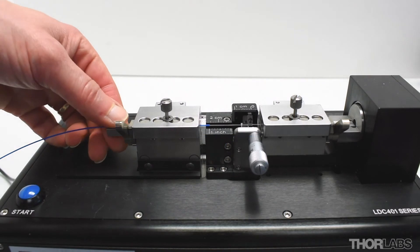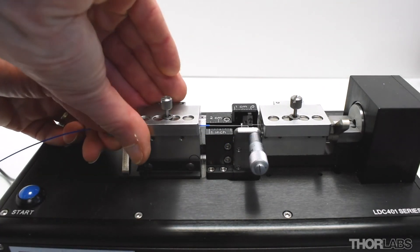To remove the cleaved fiber, press down on the left cam lever and fully open the lid.